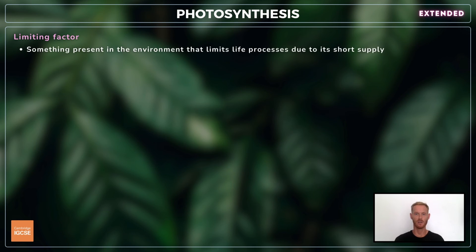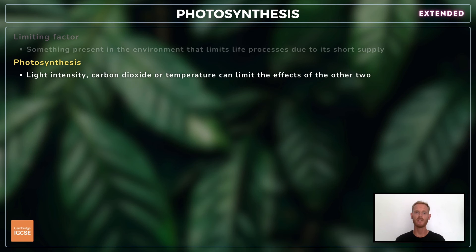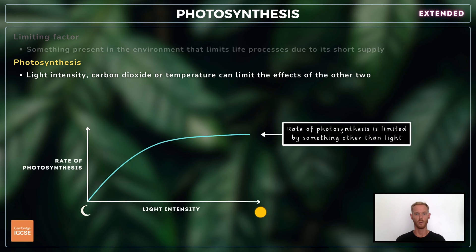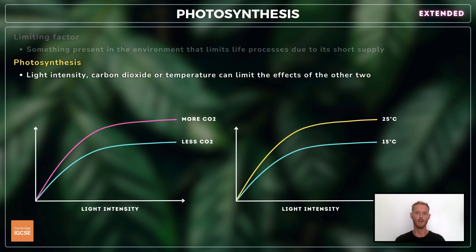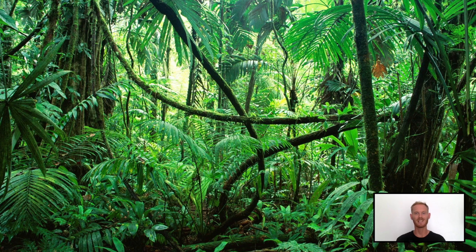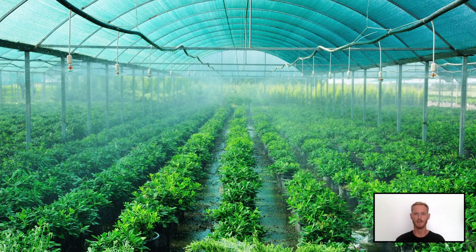Finally, you need to explain the limiting factors of photosynthesis in different environmental conditions. A limiting factor is something present in the environment that limits life processes due to its short supply. With regards to photosynthesis, any one of the external factors of light intensity, temperature, and carbon dioxide concentration can limit the effects of the other two. For example, we would expect photosynthesis to occur faster as light intensity increases; however, if the curve starts to plateau, it suggests something else is limiting the rate — it could be insufficient carbon dioxide or a temperature too low for photosynthetic enzymes to function optimally. In plants that grow on the forest floor, a lack of light due to the canopy above can limit the rate of photosynthesis. In farming, polytunnels or greenhouses are used to reduce limiting factors, with higher temperatures and artificially increased carbon dioxide levels.